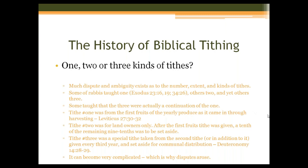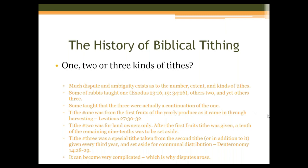It can be very complicated, and this is why many disputes arose over tithing — and we have disputes today. The question is, who got what and why of those three tithes? Whether we see them as one tithe with a one-two-three step, or three distinct tithes, there are three distributions. The first tithe was for the support of the priests, the Levites, the worship workers who kept the tabernacle, and later the temple. Much later, that same principle applied to synagogues, and today we see it applied to workers in a Christian local church.